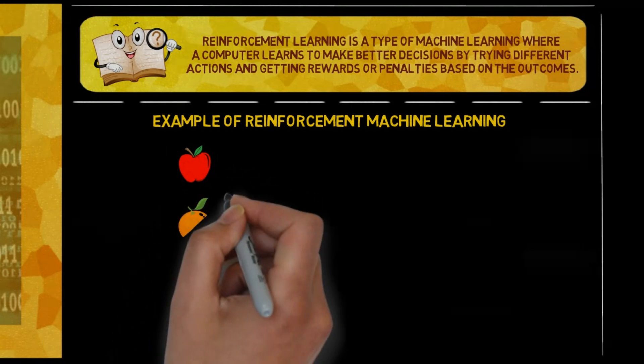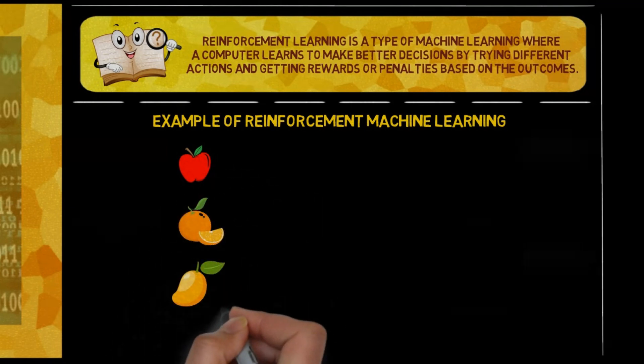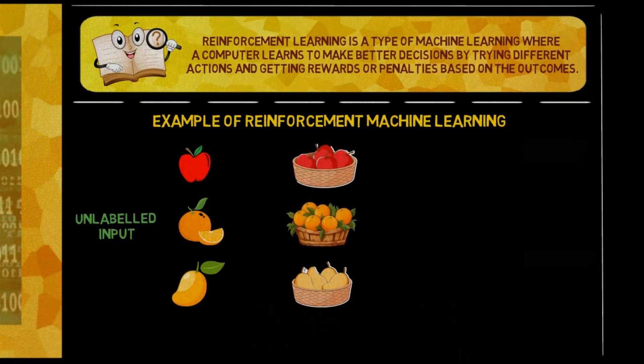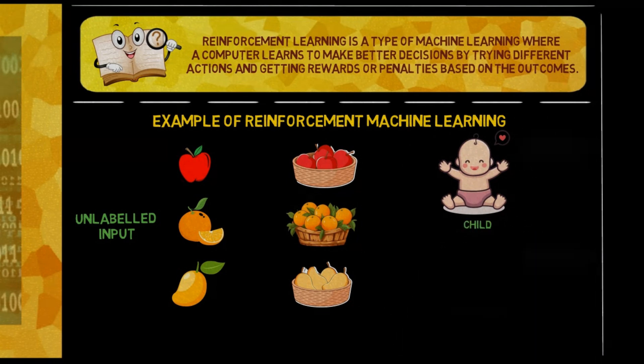Imagine you have a child who wants to learn how to sort apples, oranges, and mangoes into separate baskets. At first, the child doesn't know the difference between these fruits and randomly places them into the baskets. The child starts by placing fruits into different baskets without knowing if it's correct. Each time the child places a fruit, you give feedback.